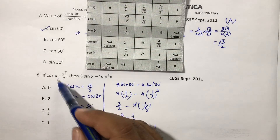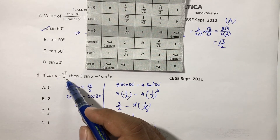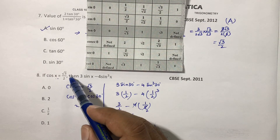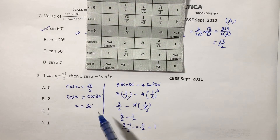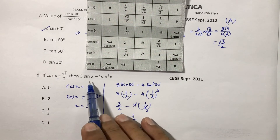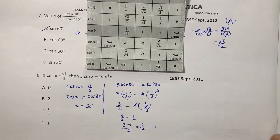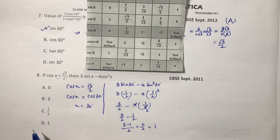Alternatively, apply Pythagoras theorem with adjacent by hypotenuse to find the opposite side, then find sin theta, which also gives 1 by 2. Substituting gives the same answer of 1. So the correct option is D.